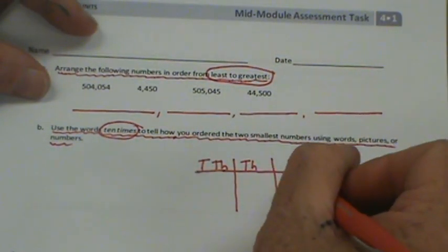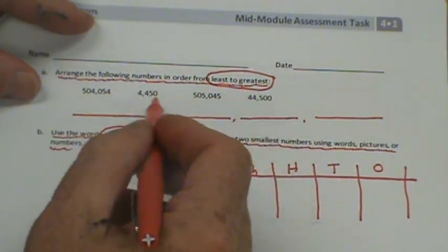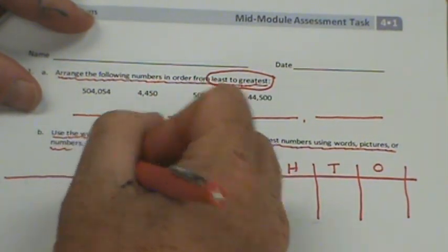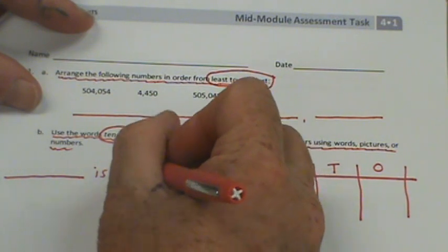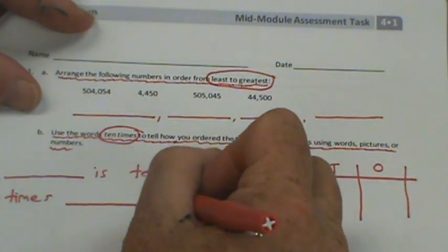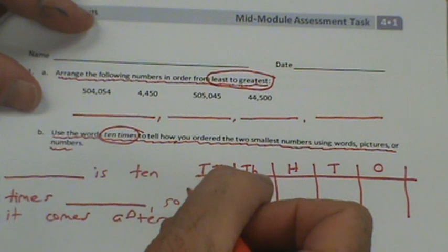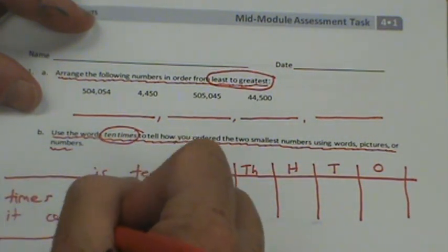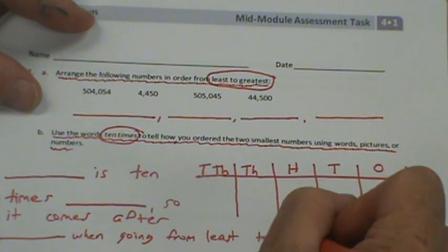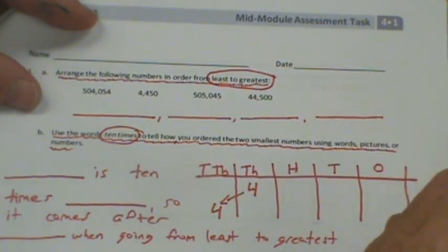So what you're going to be doing is you're going to be using the number line to put a number and show how it was multiplied ten times greater. One of these numbers up here is ten times greater than the other one. So we could say blank, not the number line, the place value chart, is ten times blank. So it comes after blank when going from least to greatest. And I'm going to even give you a hint and put a four here and an arrow that goes that. You need to fill out all the rest.